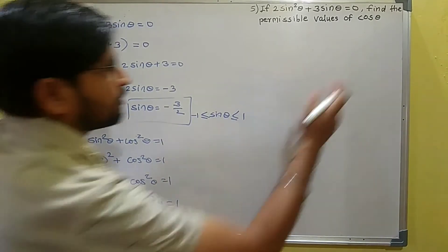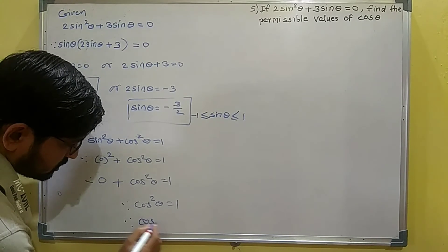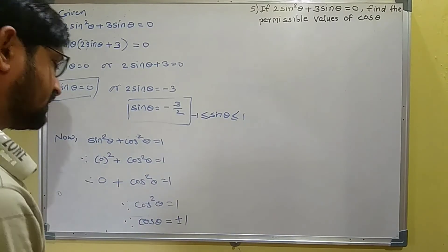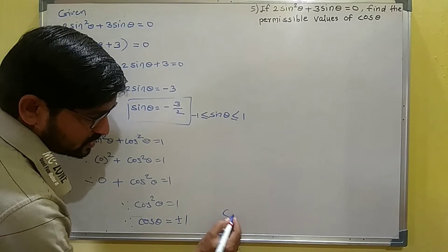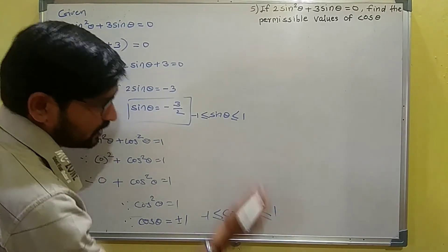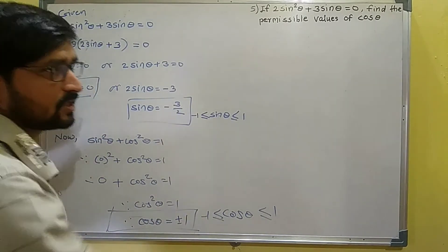Taking the square root to find cosθ: cosθ = ±1. We get cosθ = 1 or cosθ = -1. Since cosθ also lies between -1 and 1, both values are valid. That's our answer: cosθ = ±1.